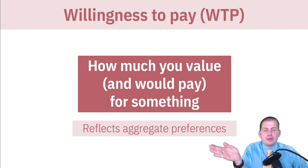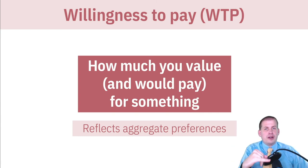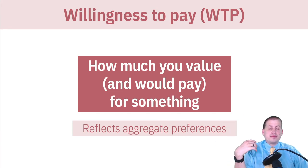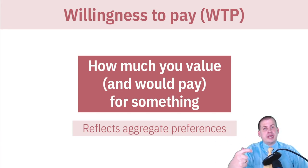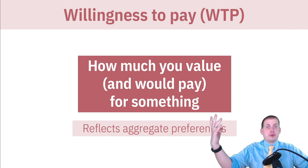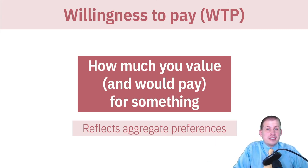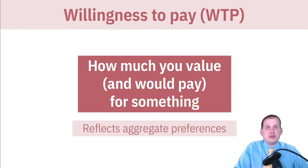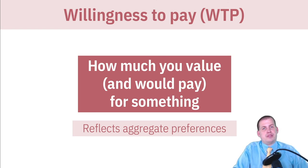All of this indifference curve stuff we've been talking about — how you want to split your money between waffles and calzones, or waffles and all other goods — if you add up everybody's individual preferences based on indifference curves, based on the choices people make and how they spend their budgets, what you end up getting is aggregate demand. It's a real thing, but it's really hard to calculate because nobody has a uniform way of measuring utility.